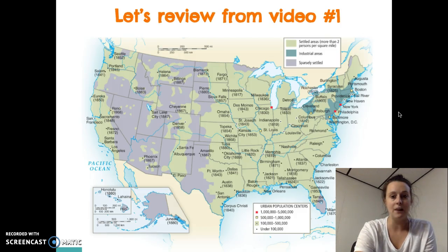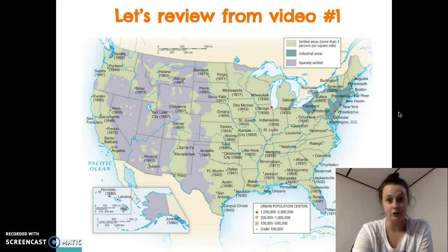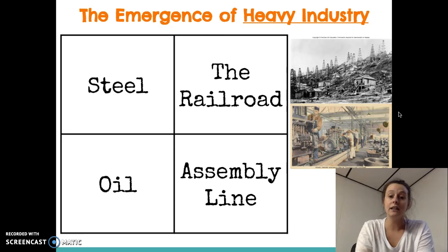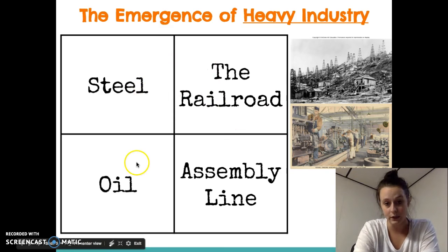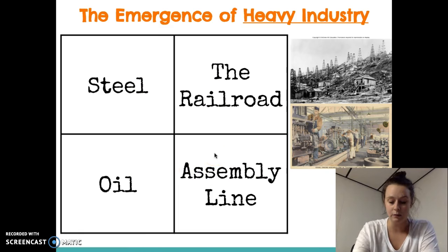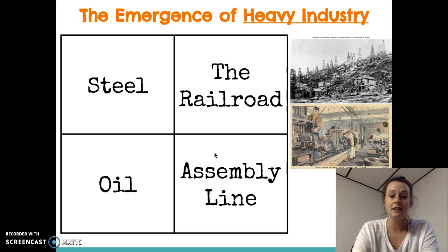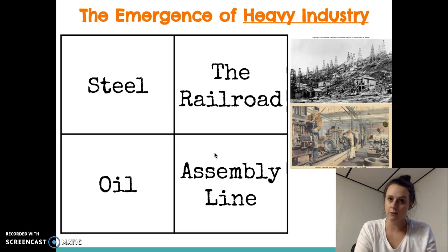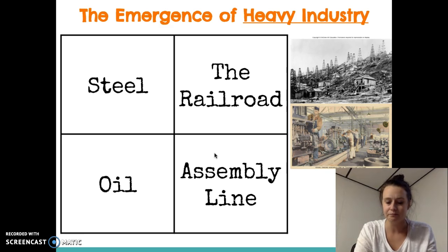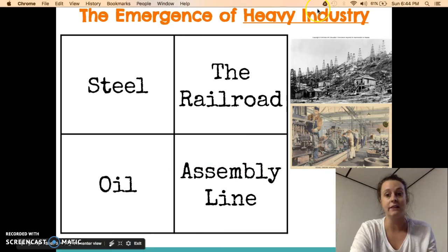I want you to quickly review from video one — what contributed to industrial growth. We're going to talk about a lot of heavy industry: steel, railroad, and oil. But first, the assembly line really contributes to economic advancements because by creating an easier way to produce products, it actually raises workers' wages and reduces their working hours, creating better working conditions. It also cuts prices for products because they can be made much more quickly.